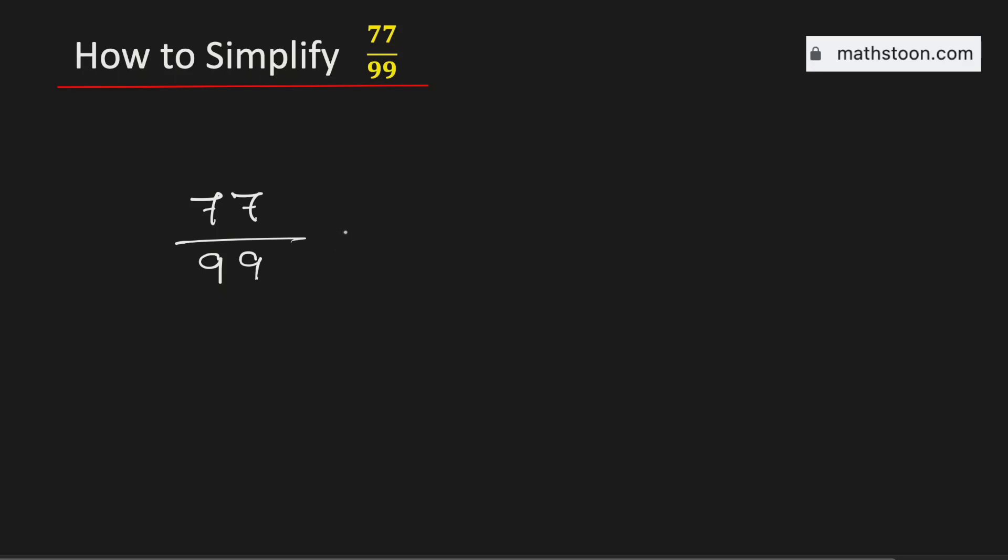In this video we will simplify the fraction 77 over 99 in its simplest form. Both the numbers 77 and 99 are divisible by 11.